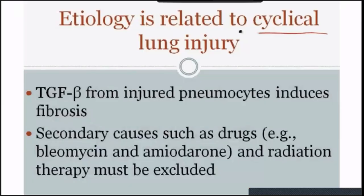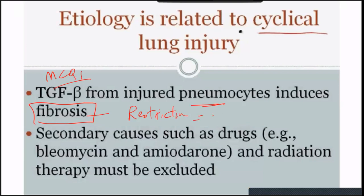Regarding etiology: lung injury is related to fibrosis. TGF-beta is one of the cytokines from injured pneumocytes that induces fibrosis — this comes in the examination as an MCQ. Secondary causes include drugs like bleomycin and amiodarone, and even radiation therapy. These cytokines activate pneumocytes to make more fibrous tissue.